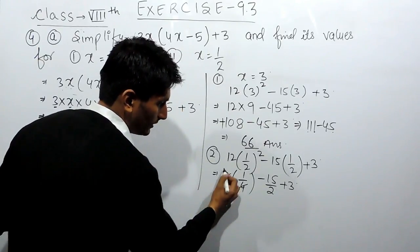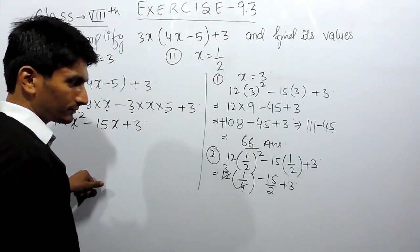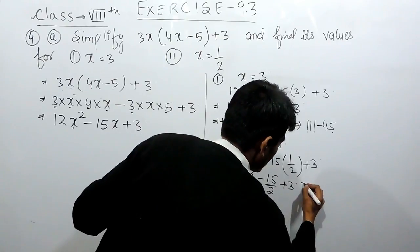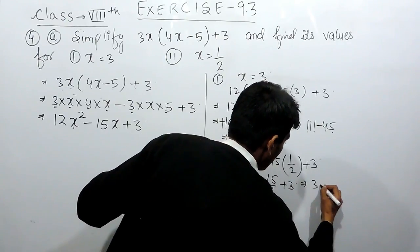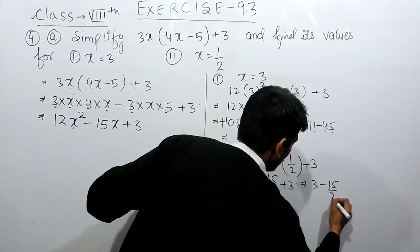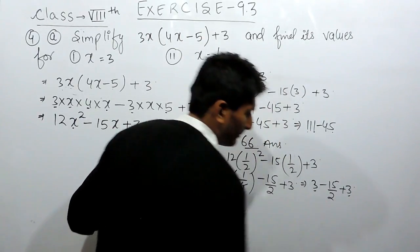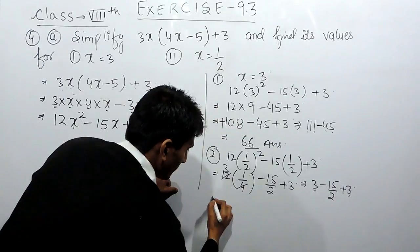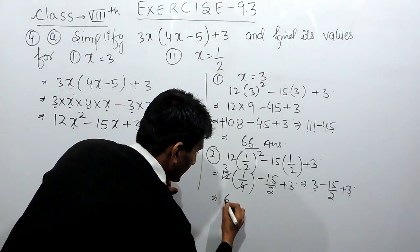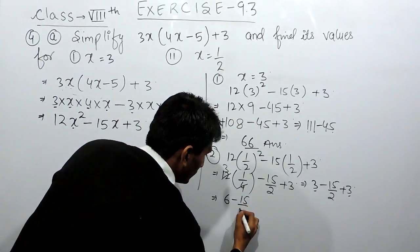This can be cancelled. Here the answer will be 3 minus 15 by 2 plus 3. This and this can be added according to BODMAS, so 3 plus 3 is 6 minus 15 by 2.